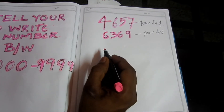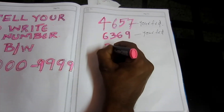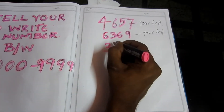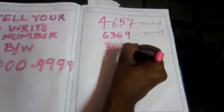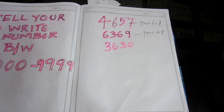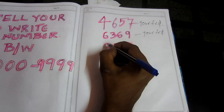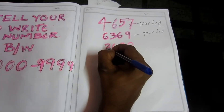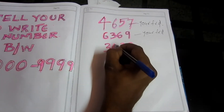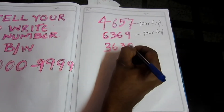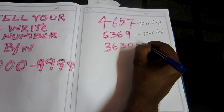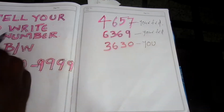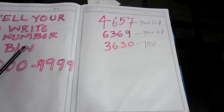Now we will see the next number. The numbers are 3, 6, 3, 0. If you want to see your face, you will see 3, 6, 3, 0. That is our number — that is our friend's number.